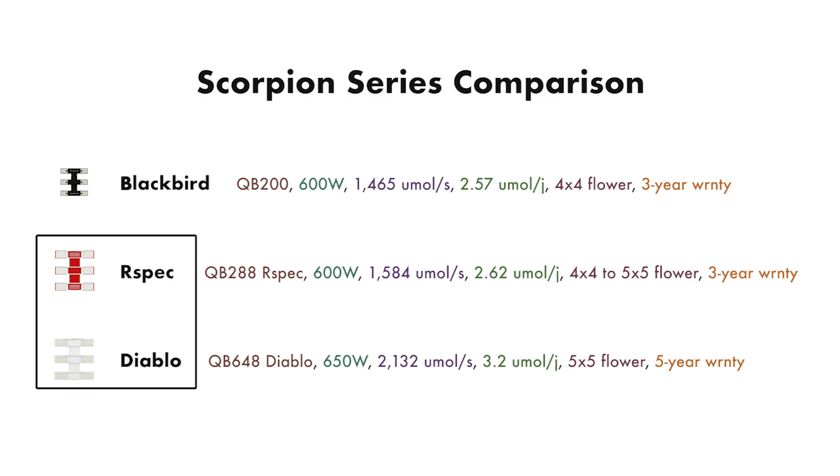The Diablo is the same size as the R-Spec. It draws 50 more watts so puts out 7-8% more heat than both the R-Spec and Blackbird. Compared to the Blackbird the Diablo beams out over 31% more light and is 20% more efficient and covers a 5x5 area. You would also pay $500 more for the Diablo but it also comes with a 5-year warranty.